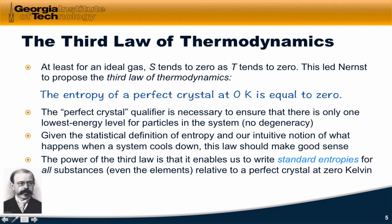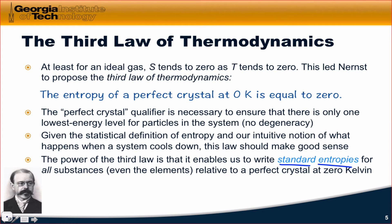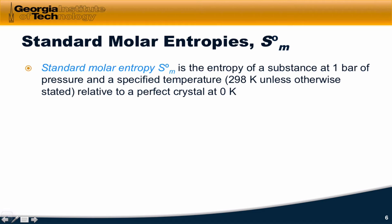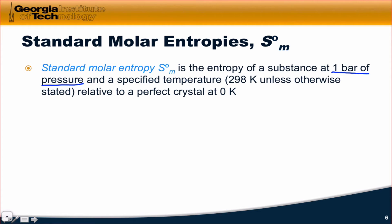What we can do now is define absolute entropies for all substances, even the elements, relative to the entropy of a perfect crystal at 0 Kelvin. We can write what are called standard entropies, or standard molar entropies, on a per mole basis. This is in many ways conceptually simpler than relying on entropies of formation. Standard molar entropy, S sub m, is the entropy of a substance at one bar of pressure and a specified temperature — which for us will be 298 Kelvin unless otherwise specified. These are the standard conditions denoted by the little circle, and the standard molar entropy is defined relative to a perfect crystal at 0 Kelvin.